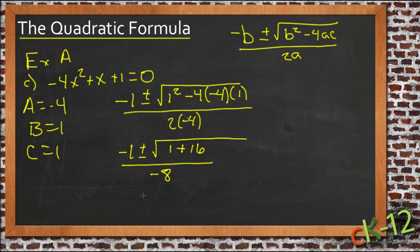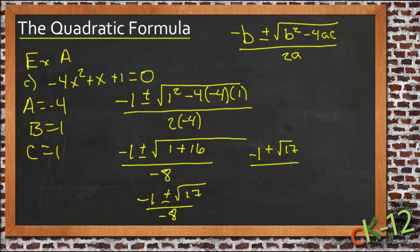So that gives us negative 1 plus or minus the square root of 17 over negative 8. So really we have two answers. We have negative 1 plus the square root of 17 over negative 8, and we have negative 1 minus the square root of 17 over negative 8. And the square root of 17 is going to be a little bit more than 4, because the square root of 16 would be 4.